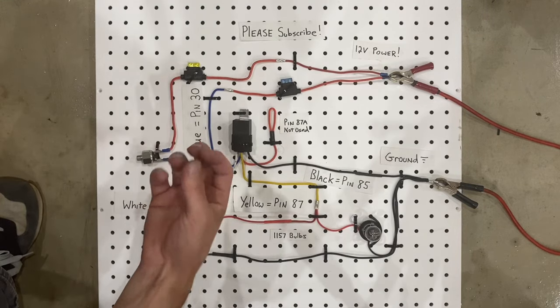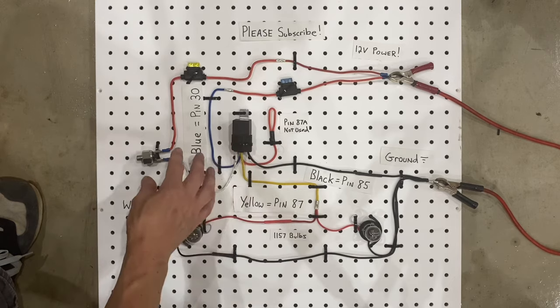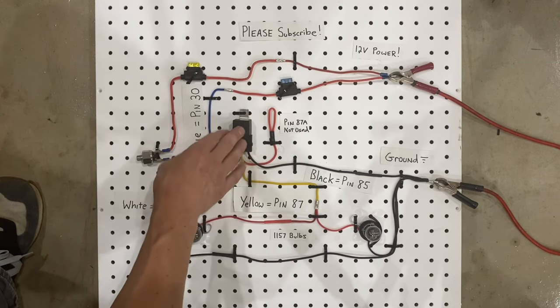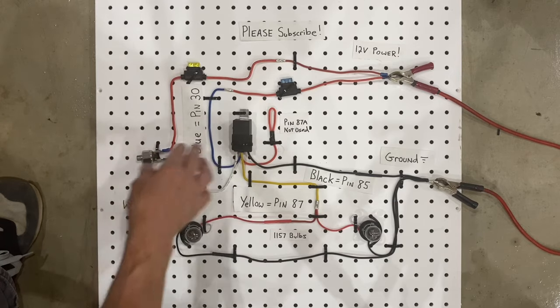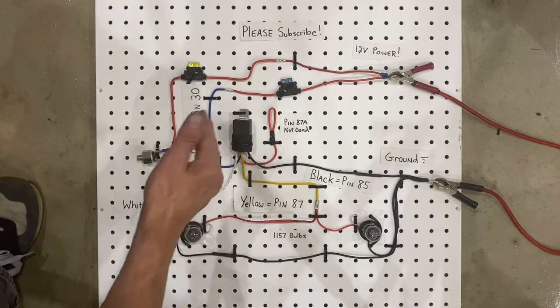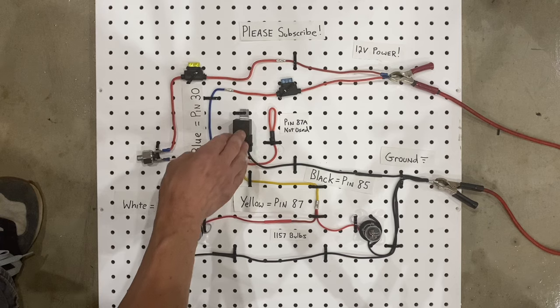But you can run a lot of electricity through a relay because they're meant to. So what you do is you have a little tiny switch tell the relay to turn on and off, and then that controls all the electricity.